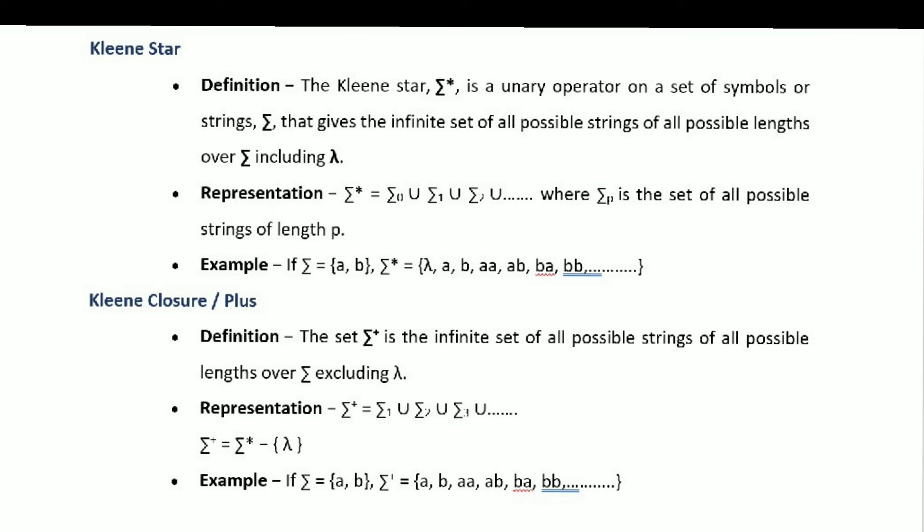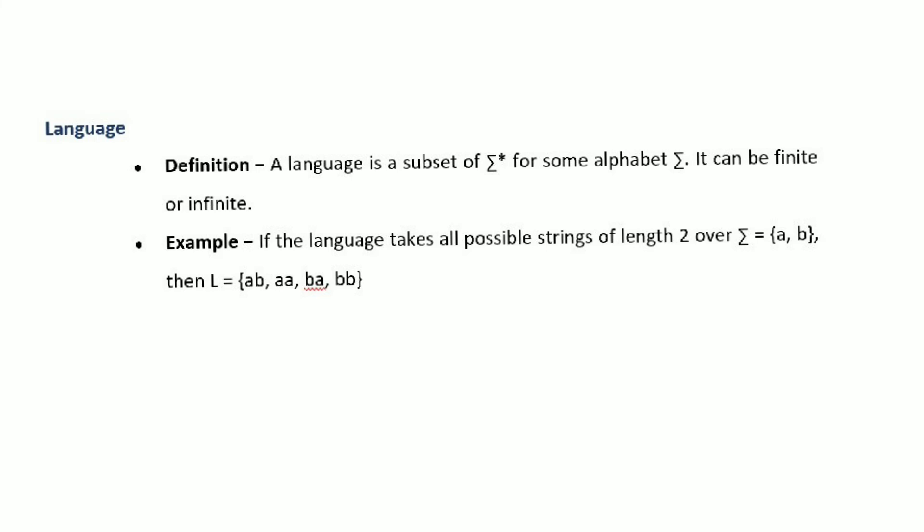Kleene star includes the empty string, while Kleene plus — also called clean closure plus — does not include the empty string. Kleene plus is a subset of Kleene star. For a given language, think of all possible strings — that set can be finite or infinite depending on the alphabet size and the language definition.